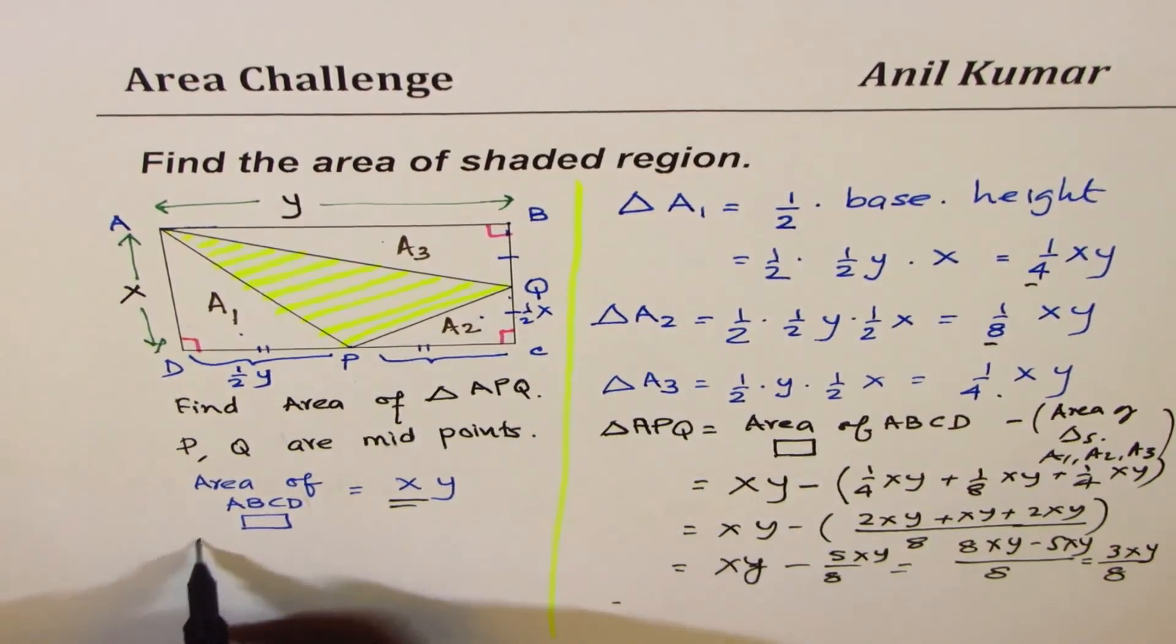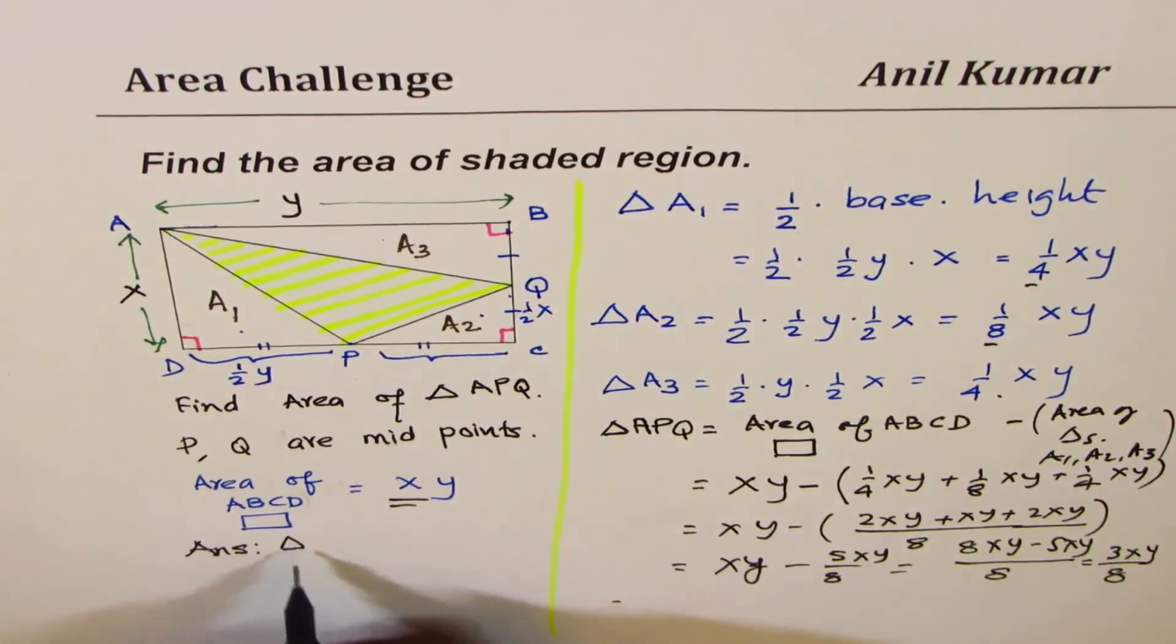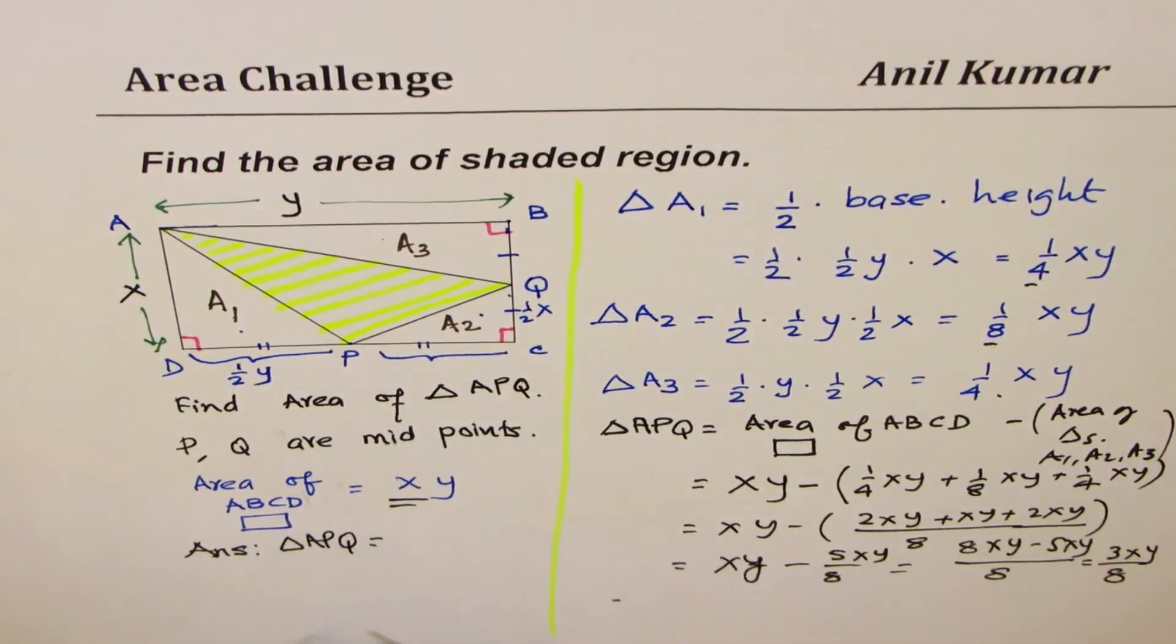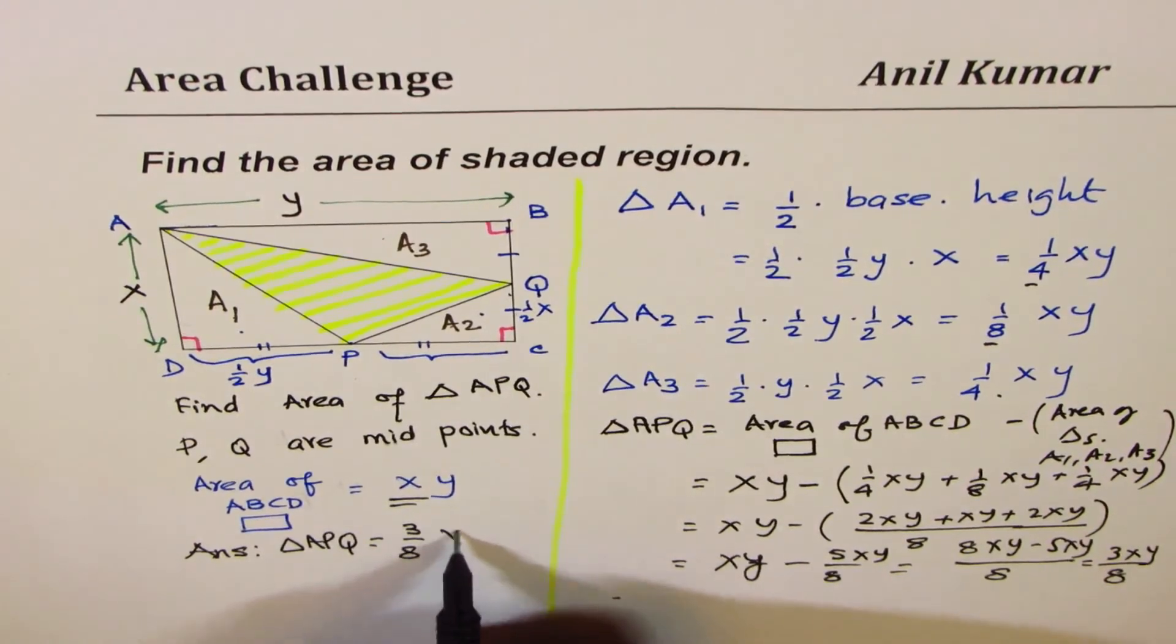You see that? So that is the area. So our answer is area of triangle APQ is equal to 3/8 of that of the rectangle XY.